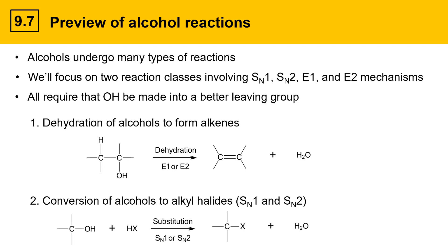Here's a summary of a generic reaction type like that: an alcohol with an OH group reacts with some sort of HX compound where X is chlorine or bromine, and substitution reactions can happen to create an alkyl halide where the X group has taken the place of the OH, and water is produced as a co-product.